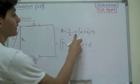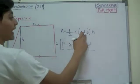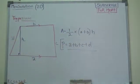So we would have half times the sum of parallel lines, which we said are A and B. So A plus B times the height, which is H.